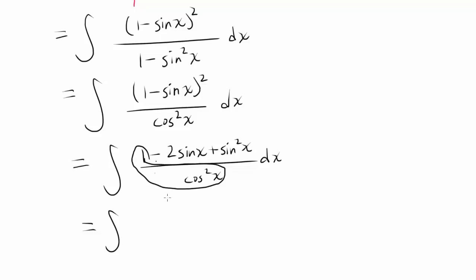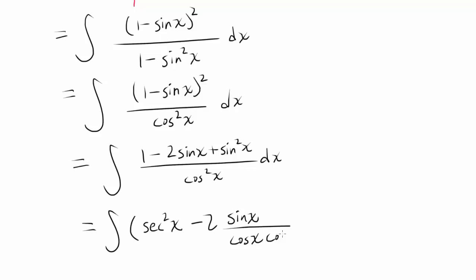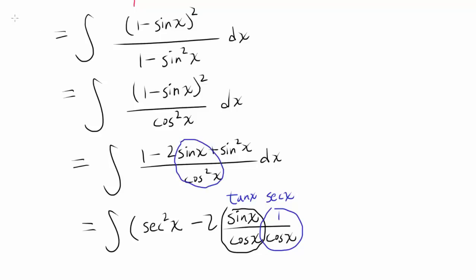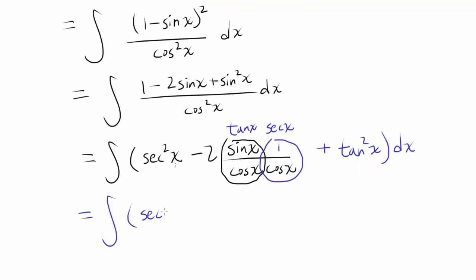So 1 over cosine squared of x gives us secant squared of x. For the middle term, minus 2 sine of x over cosine squared of x — we can write cosine squared as cosine of x times cosine of x, so sine of x over cosine of x gives tangent of x, and 1 over cosine of x gives secant of x. That means we get minus 2 secant of x times tangent of x. And sine squared of x over cosine squared of x is tangent squared of x, since sine over cosine is tangent.